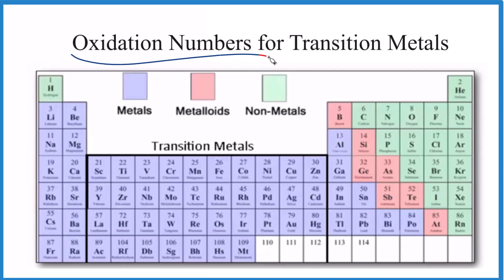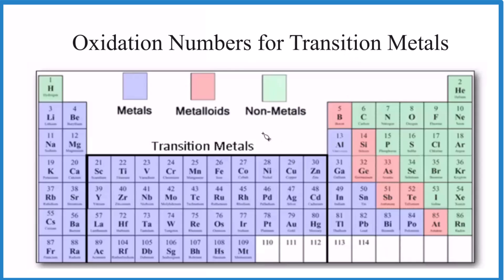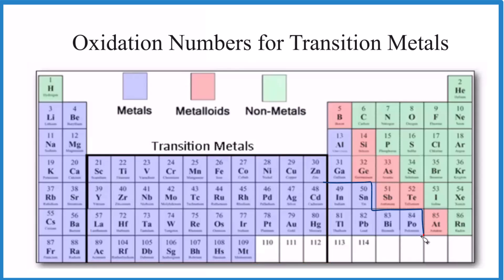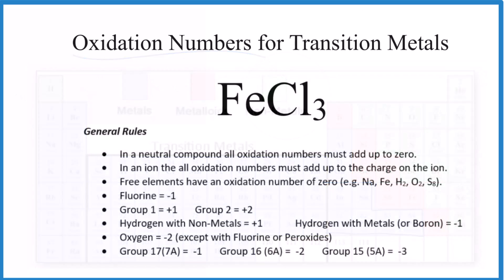Let's take a look at the oxidation numbers for transition metals — how can we find the oxidation number for a transition metal in a compound? The transition metals are right here, and we also consider these post-transition metals as transition metals when finding oxidation numbers. They all have variable charges, so we have to look at what they're bonded to in order to figure out their oxidation numbers. We have some general rules here for finding oxidation numbers.